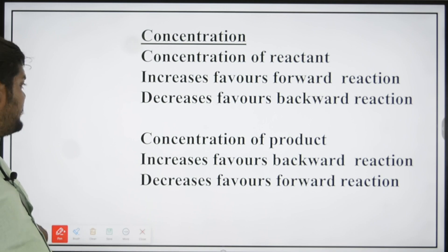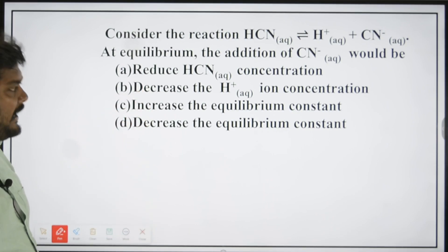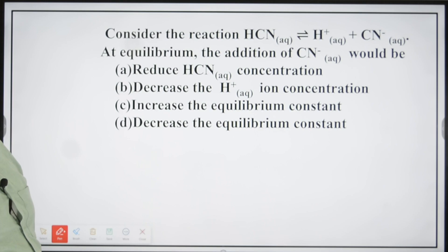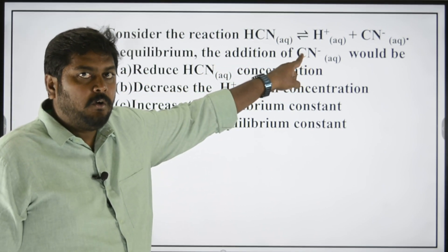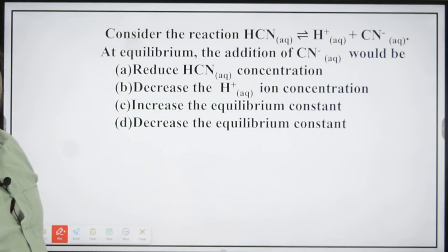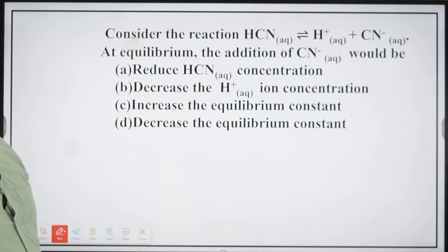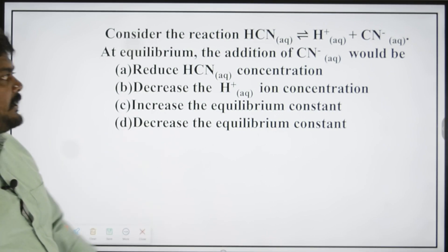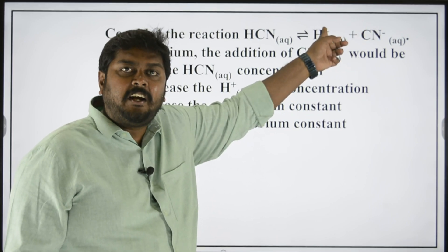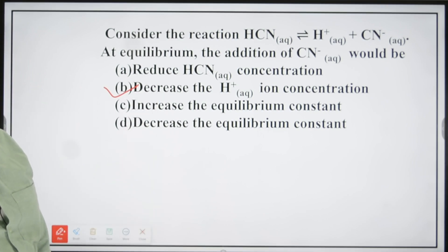Next, based on this, you will have a question. Consider the decomposition of HCN. HCN decomposes to give H⁺ and CN⁻. This reaction is at equilibrium. Now, I am going to add CN⁻. When CN⁻ is added, the reaction will decrease the HCNCN concentration, decrease the H⁺ ion concentration, and decrease the equilibrium constant. So, increasing CN⁻ concentration means H⁺ ion concentration decreases — that is the correct answer.